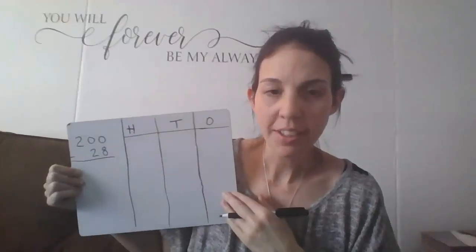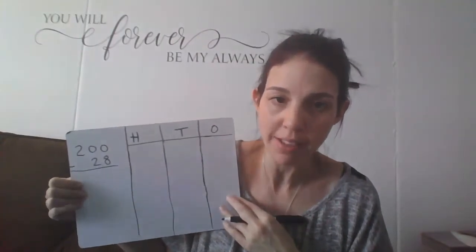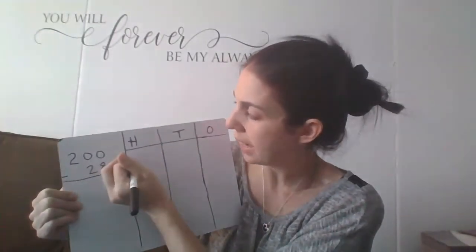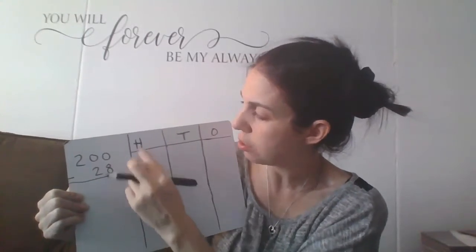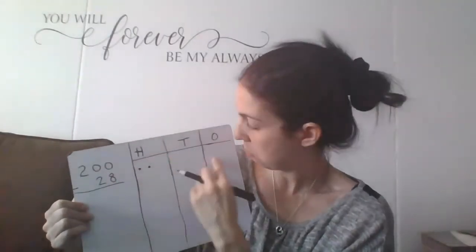Now we're going to use this knowledge to do a subtraction problem. Here's our first problem: 200 minus 28. You can show your work using the chip model, which is what I'm going to use today, or you can use place value discs or base 10 blocks — basically whichever method is best for you. So 200 — I'm going to have two hundreds here, two in my hundreds spot. Now I want to come to my ones and take away 8 ones, but there's nothing here — I can't take away anything.